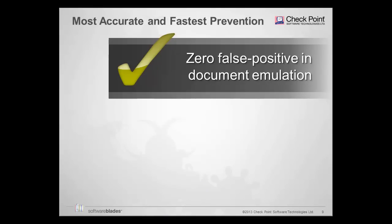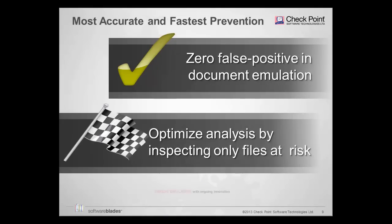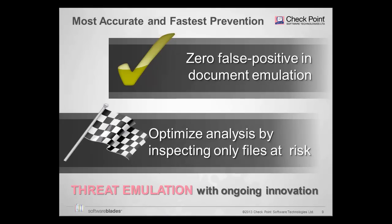The discovery and prevention steps happen within one to two minutes. We use patent-pending technologies that have been proven to emulate over a quarter million files with zero false positives. We built in file inspection heuristics such as positive elimination of files, ensuring that only suspicious files are emulated, completing the process as fast as possible and optimizing performance.